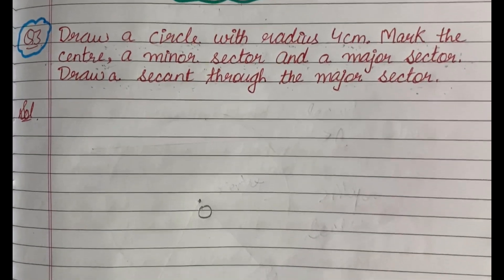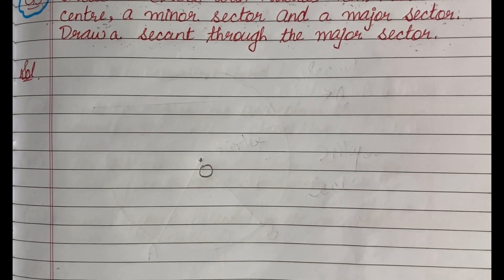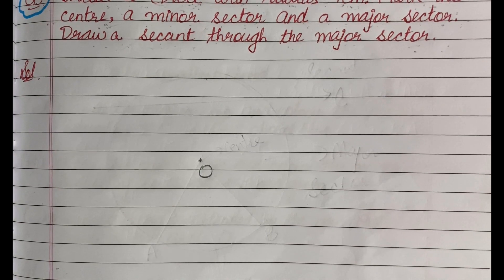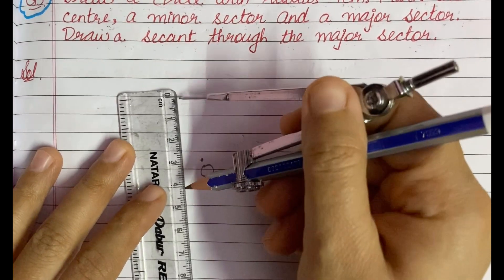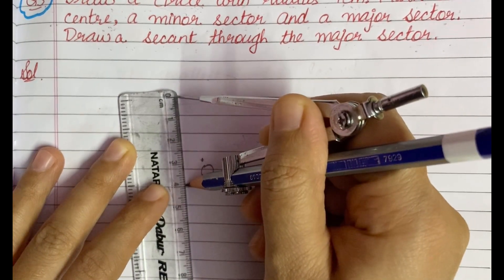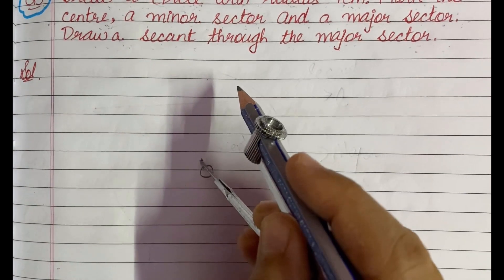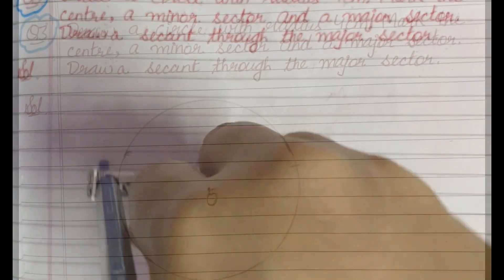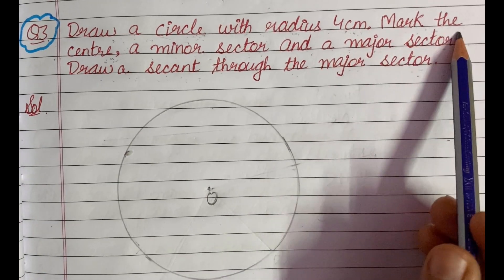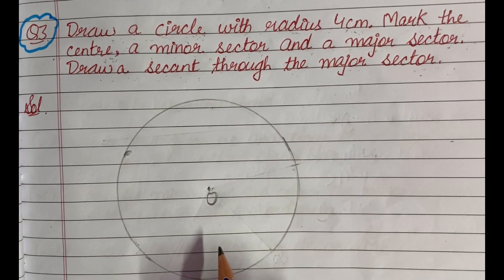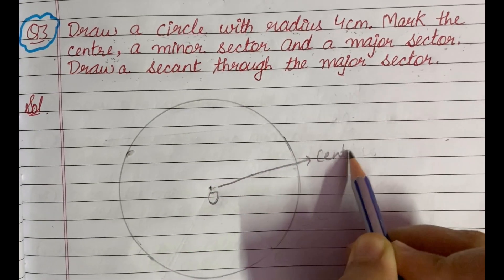On a piece of paper, first mark any point O. Through this point O, we will draw a circle. Take your compass and ruler and open the compass to 4 cm. Put your compass at point O and draw a circle. After drawing the circle, mark O as the center of the circle.